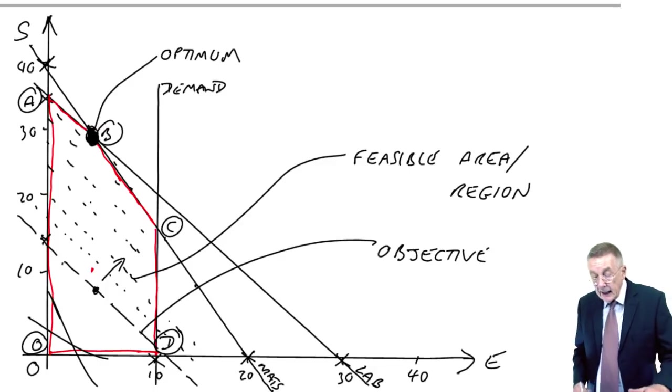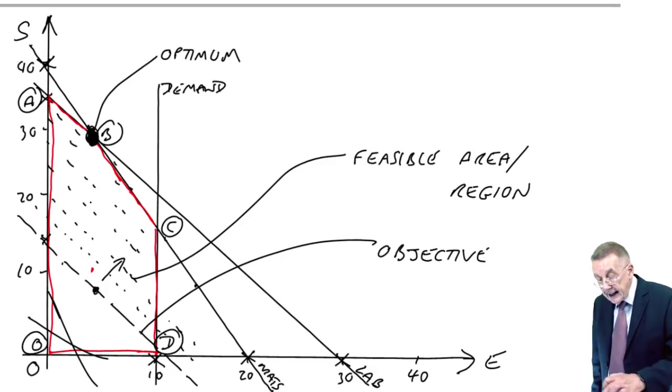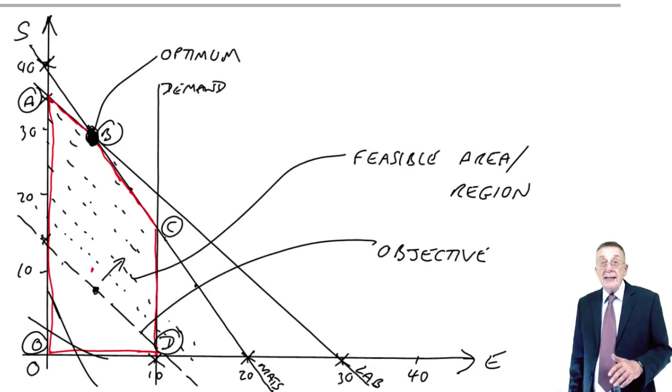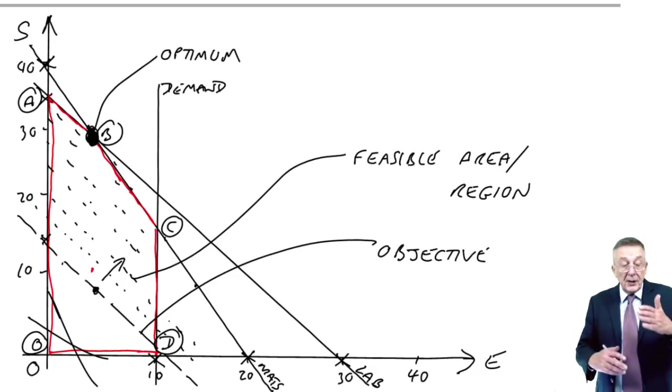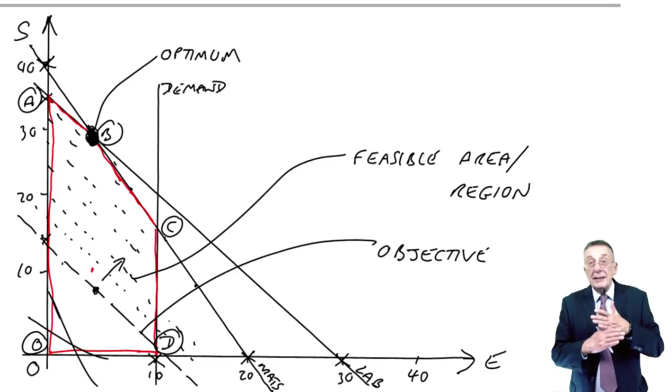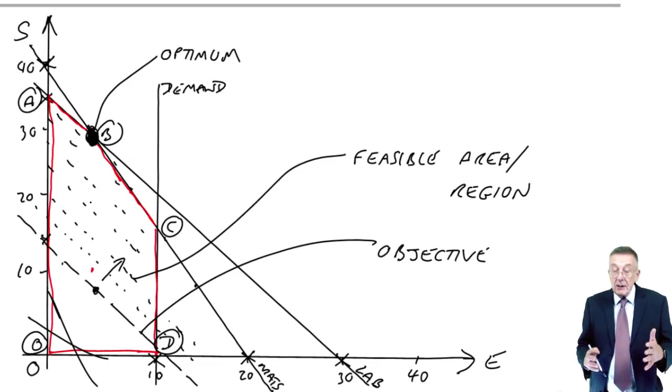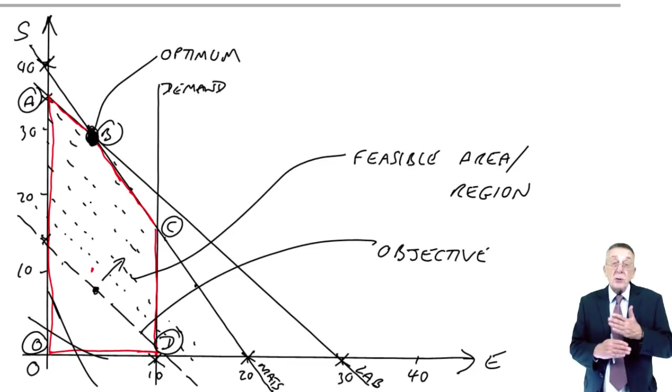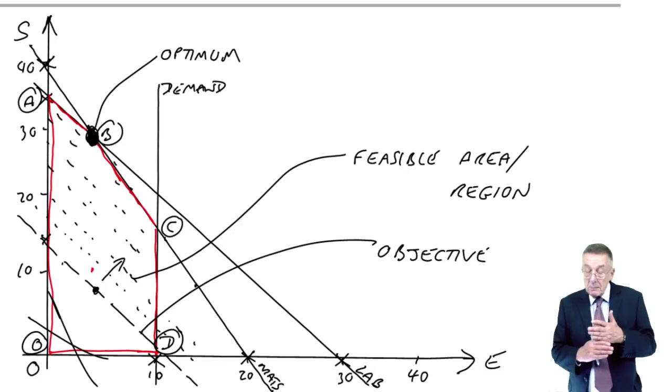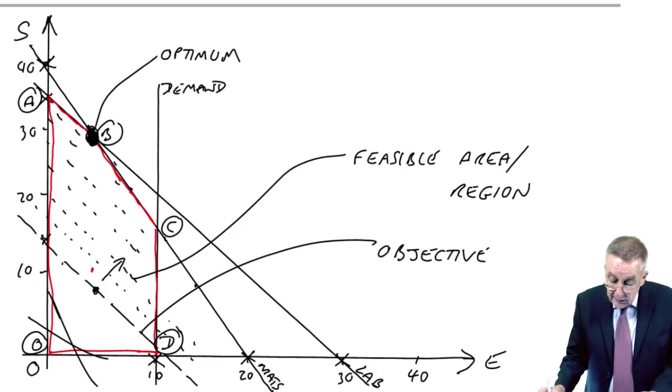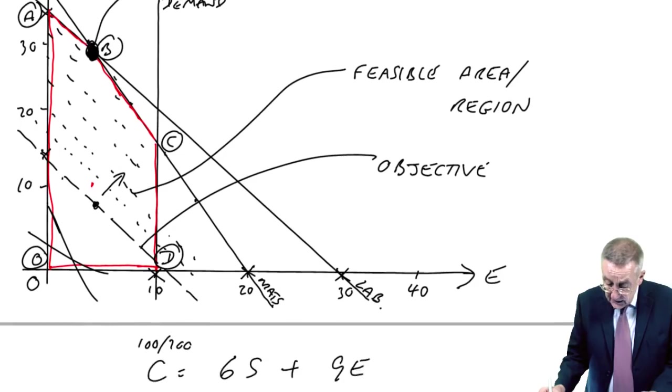Now, point B here is where the labour line crosses the materials line. And of course, two lines only cross at one point. And because we know the equations of the two lines, we can work out what the value is that satisfies both, the value when they cross. So let's do it. The two lines that cross here, materials and labour.